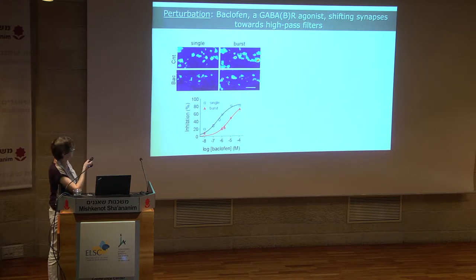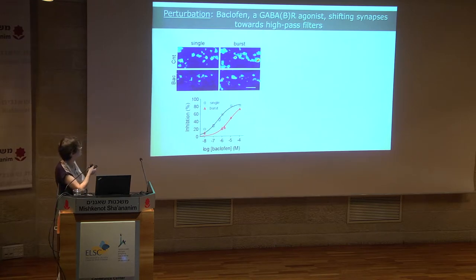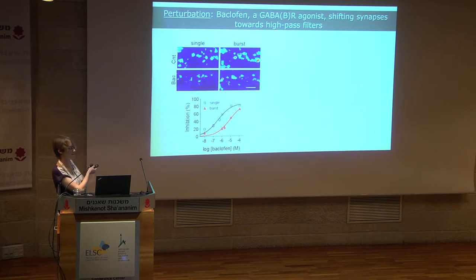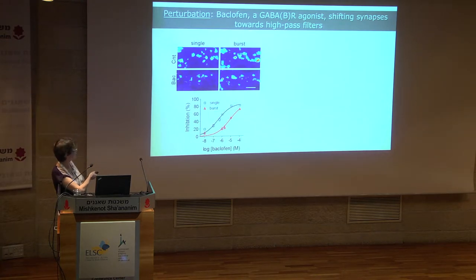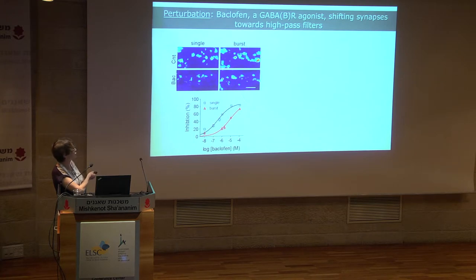If we add baclofen, the agonist of GABA-B receptors which acts similarly to GABA, we get synaptic inhibition. But it is not a simple synaptic inhibition — as with any G-protein coupled receptor, it has frequency-dependent synaptic inhibition. It is much more effective at inhibiting synaptic transmission during single spikes compared to transmission during spike bursts, with a shift in apparent affinity.